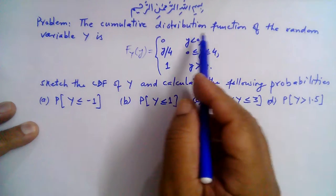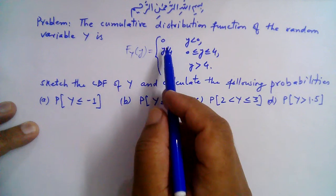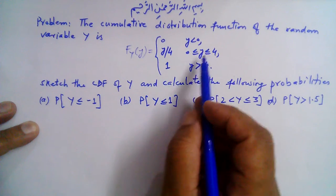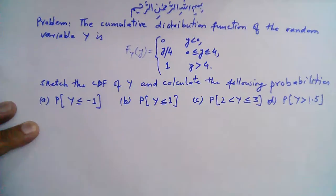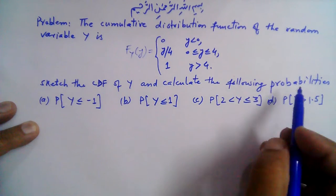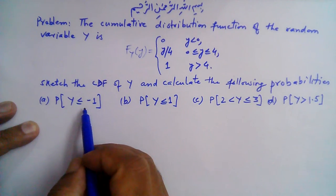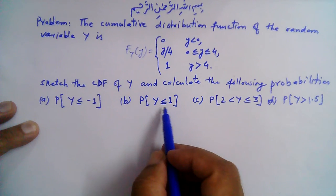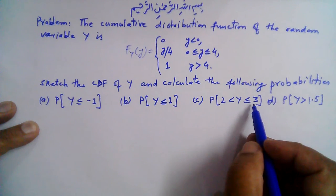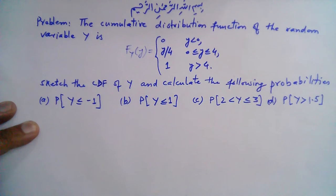Bismillahirrahmanirrahim. The cumulative distribution function CDF of the random variable Y is: F_Y(y) = 0 when y ≤ 0, y/4 when y is between 0 and 4, and 1 when y > 4. Sketch the CDF of Y and calculate the following probabilities: part a) P(Y ≤ -1), part b) P(Y ≤ 1), part c) P(2 < Y ≤ 3), and part d) P(Y > 1.5).